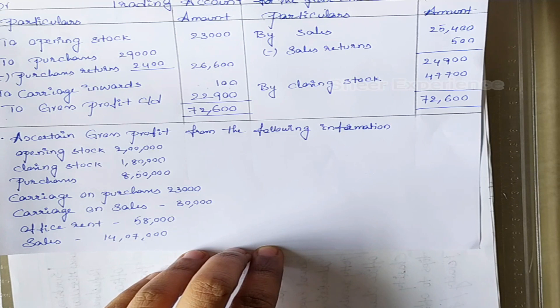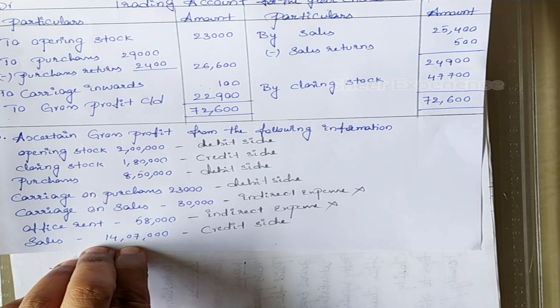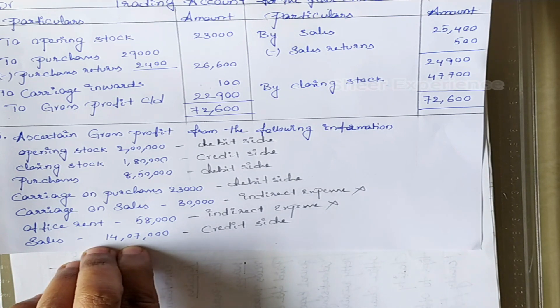Our next problem: ascertain gross profit from the following information. Opening stock: 2,00,000. Closing stock: 1,80,000. Purchases: 8,50,000. Carriage on purchases: 23,000. Carriage on sales: 30,000. Office rent: 58,000. Sales: 14,07,000. In this problem we have three new accounts compared to previous problems: carriage on purchases, carriage on sales, and office rent.